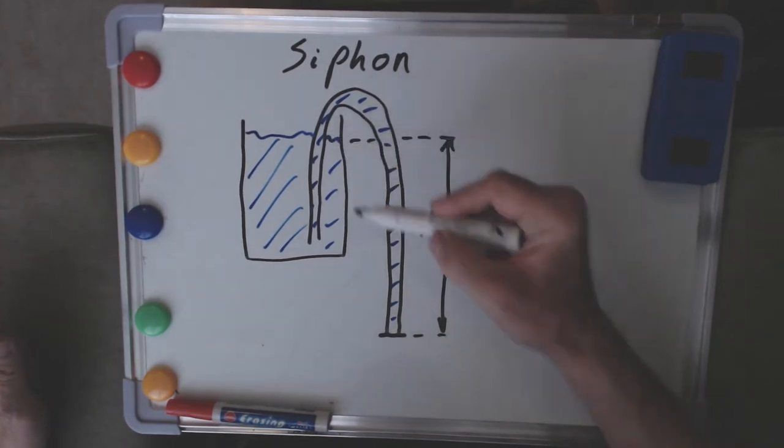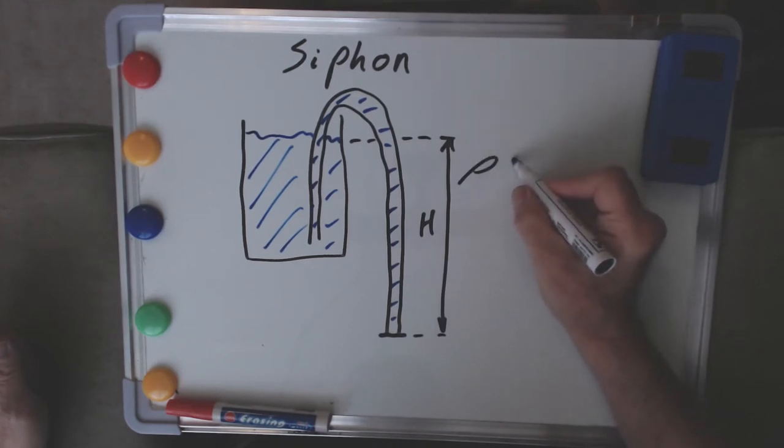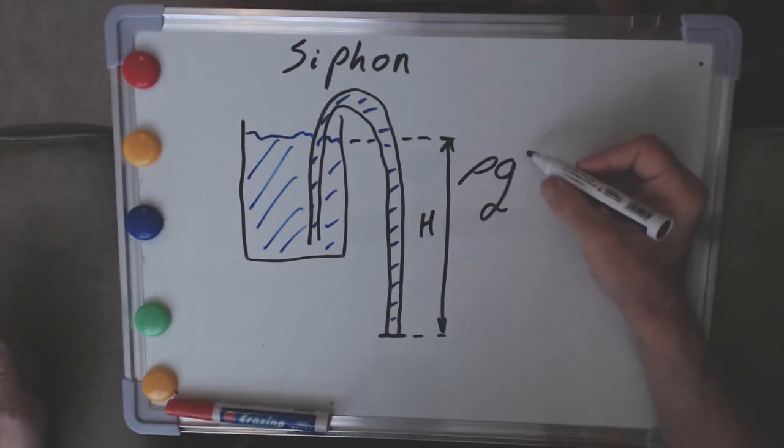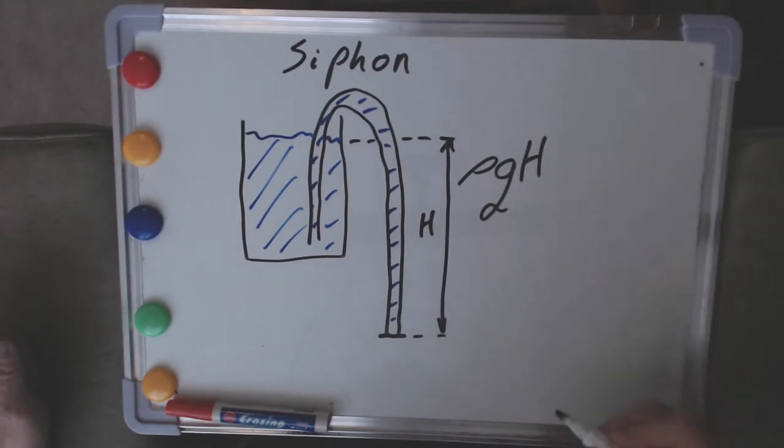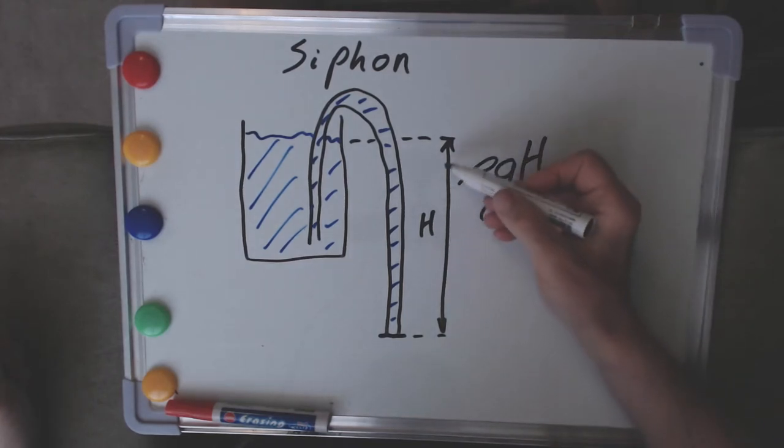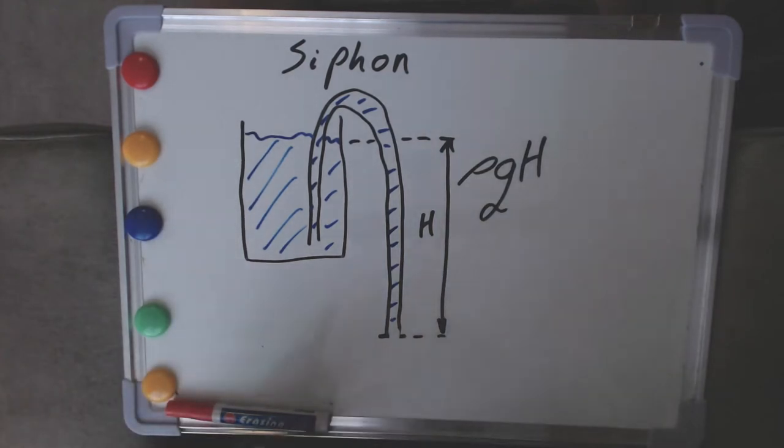So this is our h, which means the pressure difference between here and here is again given by the density of the fluid, in this case water, multiplied by the acceleration due to gravity g, and this height difference h. So the bigger the value of h, the bigger the pressure difference.